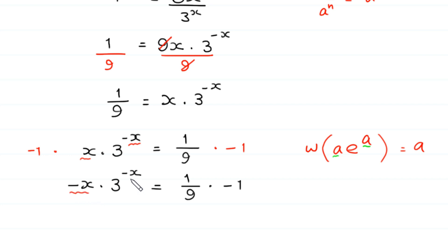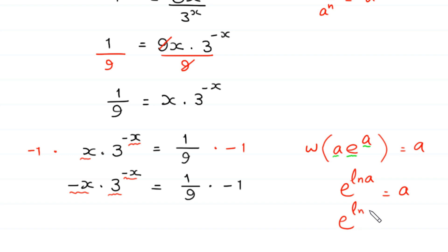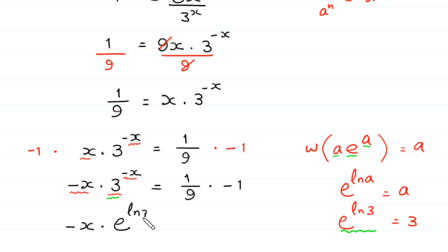To use the Lambert W function, we need e in place of 3. Using the natural log property e^(ln a) = a, we know e^(ln 3) = 3. So we replace 3 with e^(ln 3), giving negative x times e^(ln 3) to the power negative x, which equals 1/9 times negative 1.